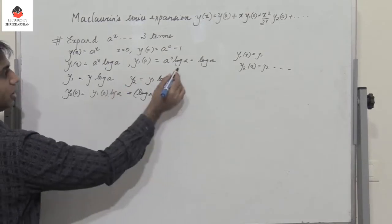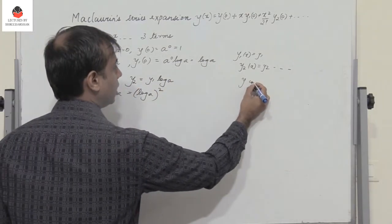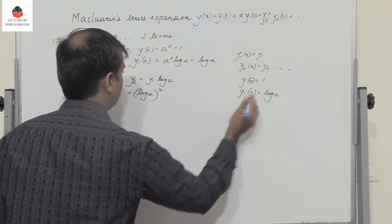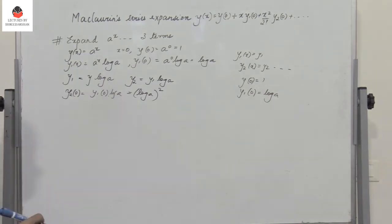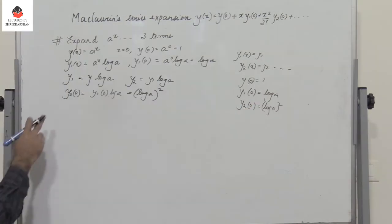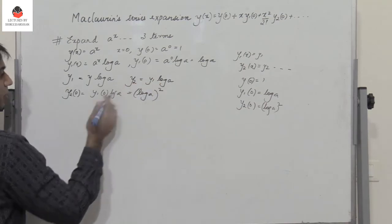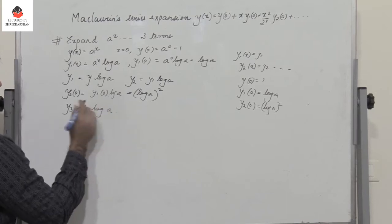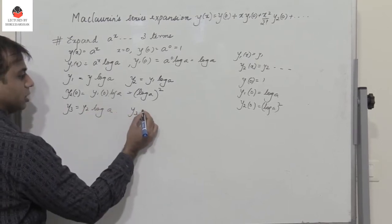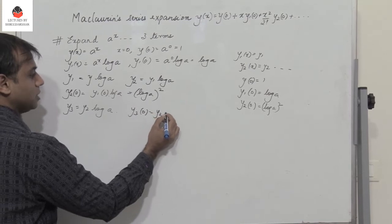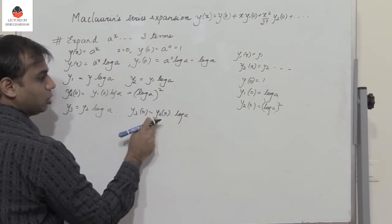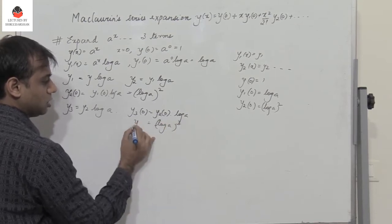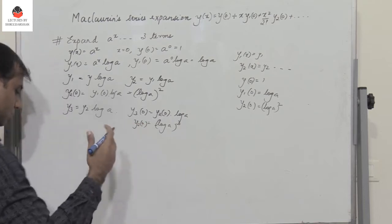So the values are: y(0) = 1, y₁(0) = log a, y₂(0) = (log a)². Differentiating again gives y₃ = y₂ · log a. Put x = 0: y₃(0) = y₂(0) · log a = (log a)² · log a = (log a)³, and so on.